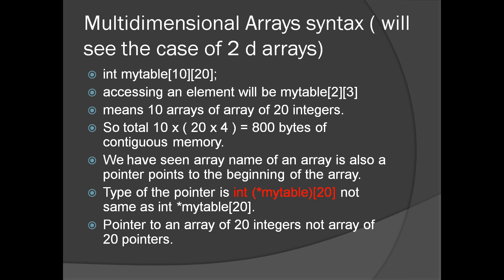Let's take the case of two dimensional arrays or 2D arrays. This is how we declare the array and this is how you access an element. So my_table in this case is 10 arrays of 20 integers, so total 10 times 20 times 4 equals 800 bytes — 4 being the size of an integer. So 800 bytes of contiguous memory. In this case also the name of the array points to the beginning of the array, just like in the case of a single dimension array.